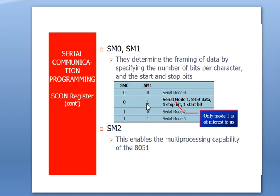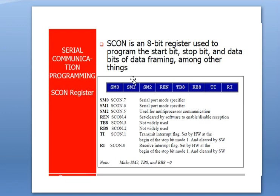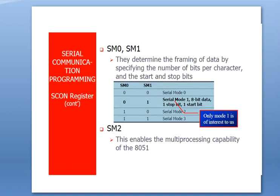When SM0=0 and SM1=0, serial mode 0 is selected. When SM0=0 and SM1=1, mode 1 is selected — this is the most common mode for 8051 communication. Loading 50h into SCON sets bits as 0101 0000: SM0=0, SM1=1 selects mode 1 (8-bit data, one stop bit, one start bit), and REN=1 enables reception. This is the standard configuration for 8051 to communicate with external peripherals like a computer.